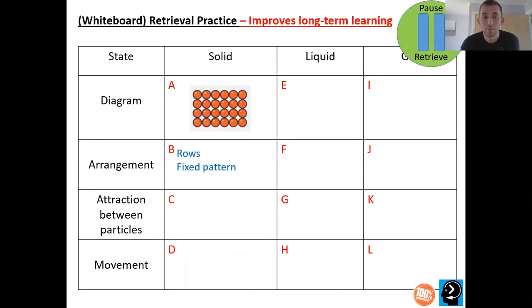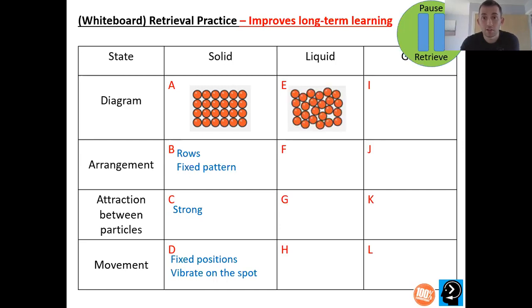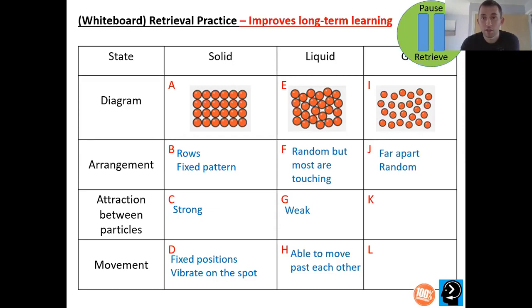Okay, so hopefully you had a go at this. Let's go for the answers. In a solid, the arrangement is rows in fixed pattern. The attraction is strong between particles. Really strong. The movement, they vibrate on the spot in fixed positions. In a liquid, you've got your particles are still touching. They're still touching, but they're now random. So the arrangement is random, but most are touching. The attraction is very weak. And the movement of particles are able to move past each other. And finally, with a gas, the particles look like this. So none are touching. They're far apart. They're randomly organized. The attraction is really weak. So really, really weak attraction between the particles. And finally, their movement, they're able to move in all directions. They're free to move wherever they want.